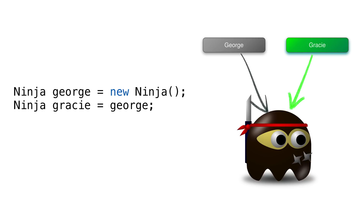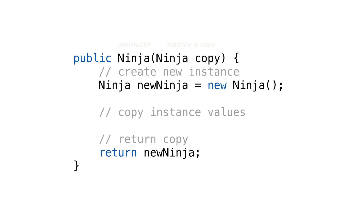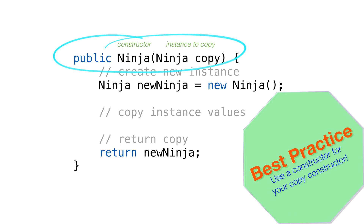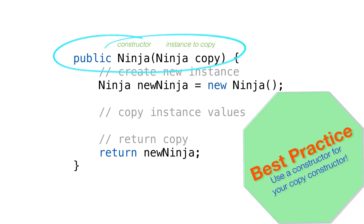We need to create a copy constructor in Java to have a new enemy instance. A copy constructor is a method that takes an instance of a class and returns a new instance copied exactly like the first. You can use a static factory method, but best practice is to use a constructor that takes a single instance of the class as a parameter. We'll create our copy constructor to use a constructor.